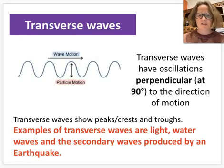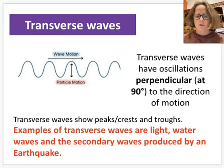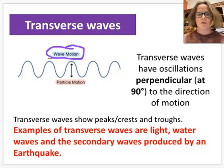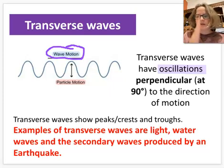Transverse waves are our first example. Examples of transverse waves are light, water waves, and a type of wave produced by earthquakes called secondary waves. Looking at the picture, the wave motion moves from left to right, and as the wave moves, particles go up and down. So in a transverse wave, oscillations — the movement of the particles — are perpendicular, or at right angles, to the direction of motion.